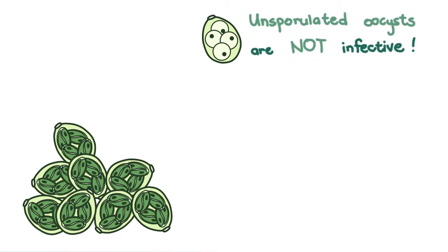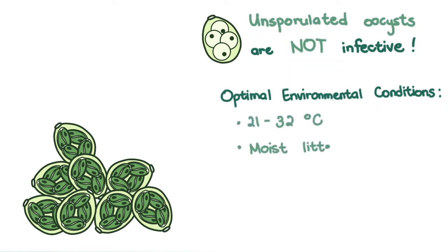They sporulate when optimal conditions are met. This is usually at temperatures between 21 to 32 degrees Celsius in moist litter with sufficient oxygen. This takes a couple of days.